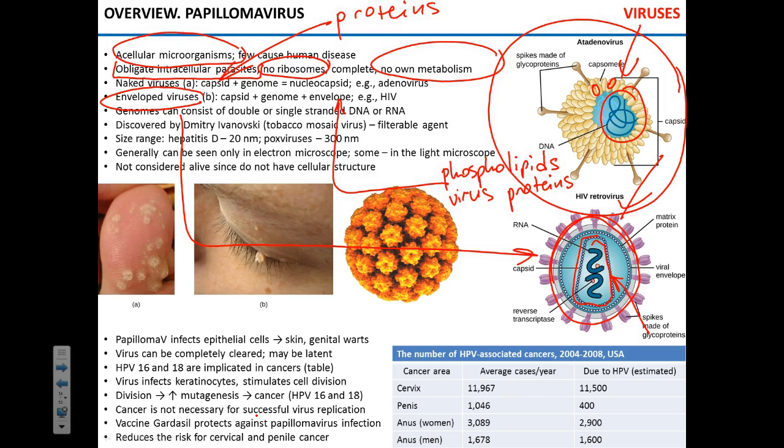To summarize: naked viruses consist of capsid and genome; enveloped viruses consist of envelope, capsid, and genome. Now, what are the possible genomes for viruses? Remember, double-stranded DNA is the genome of humans, fish, and bacteria — all living organisms have double-stranded DNA genomes, no exceptions. But viruses aren't living, so they don't have to follow that rule. Viruses may have double-stranded DNA, single-stranded DNA, or RNA genomes, single or double stranded — they don't have this restriction.